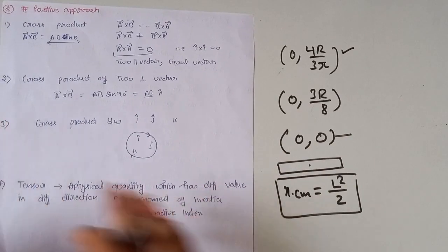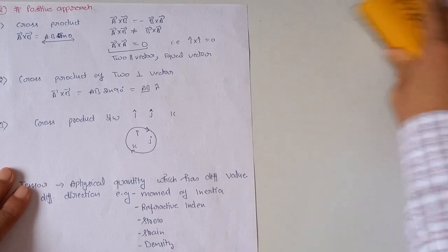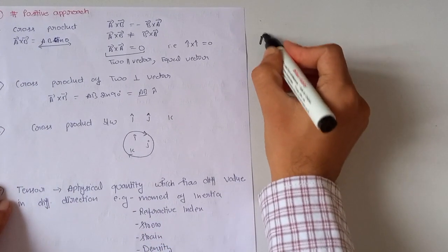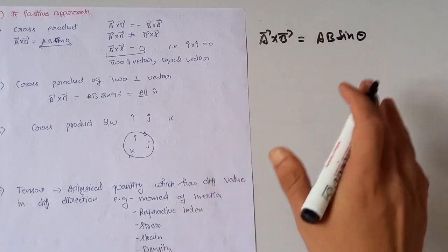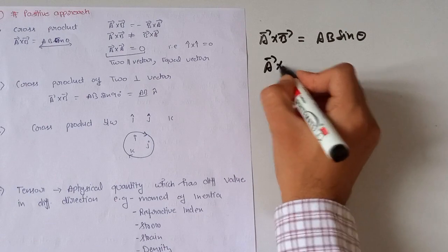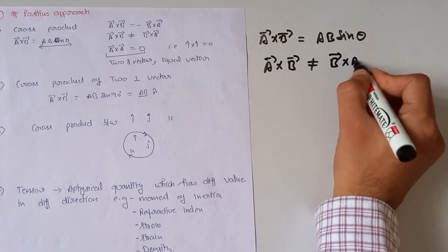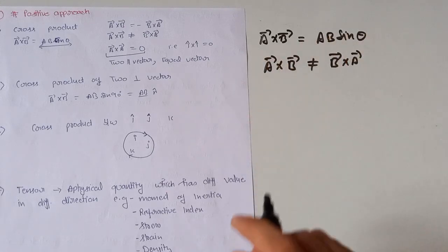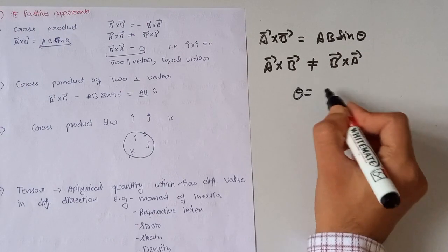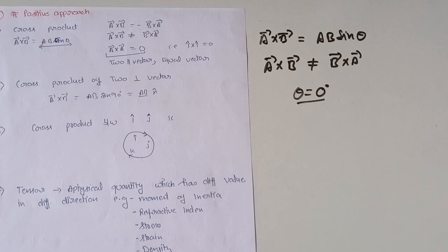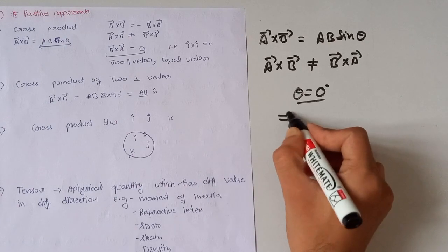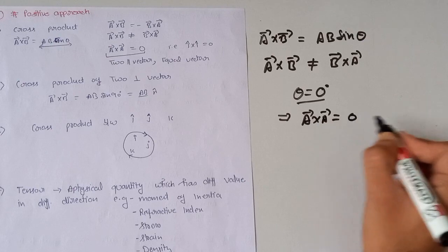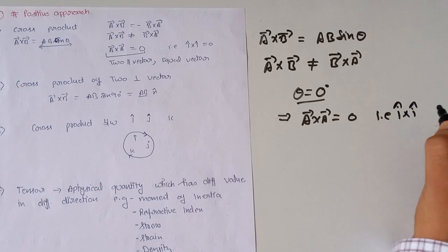Next, what is a cross product? If a and b are two vectors, then a × b = ab·sinθ, and it is not commutative — a × b ≠ b × a. If two vectors are parallel to each other, the angle θ between them is zero degrees, which implies a × a = 0. This means i × i = 0.